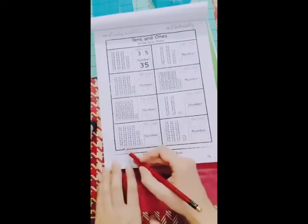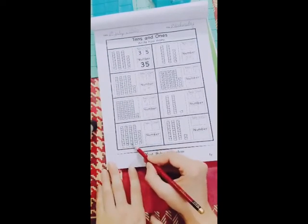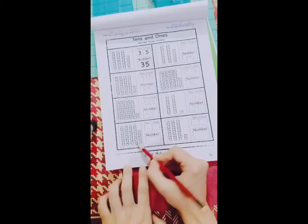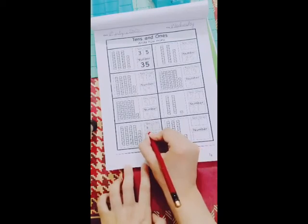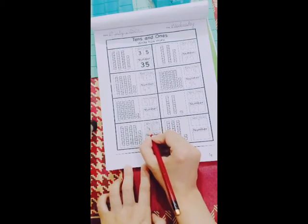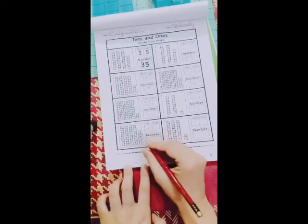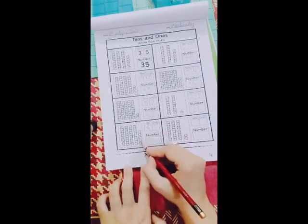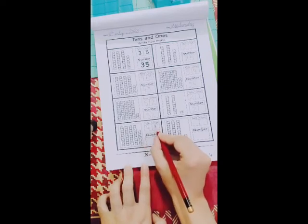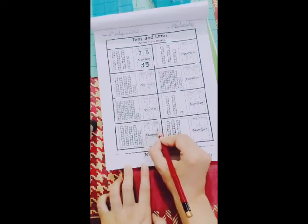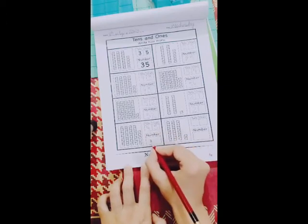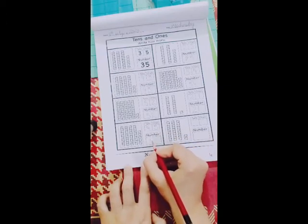And the second last is one, two, three, four. We have four sets of buildings, so we have four tens. And one, two, three, four, five open windows, so we have five ones. And the number is 45.